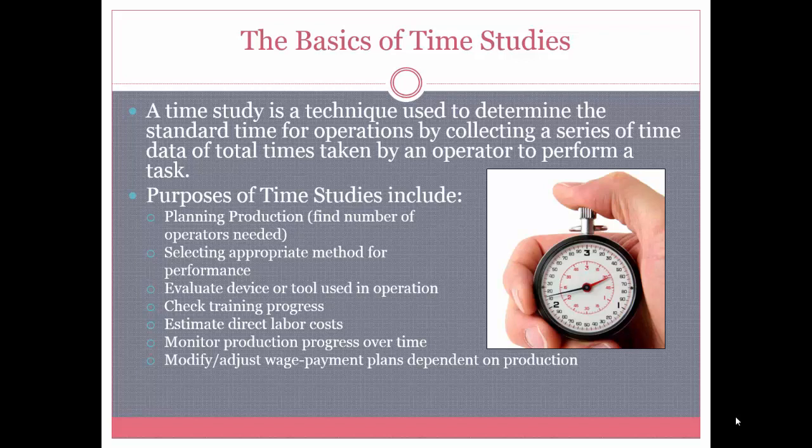One of the most important purposes is for planning production — you determine the number of operators you need depending on the standard time for a specific task. Another purpose is selecting an appropriate method for performance, meaning using one technique instead of another depending on the shortest time, and evaluating whether a device or tool helps the production process be faster. You can also use it to estimate direct labor costs, determine worker pay in manufacturing processes — workers have a base rate and depending on their production they get extra money added to their salary — and to check training progress, determine how long the learning curve will last, and monitor production, among others.